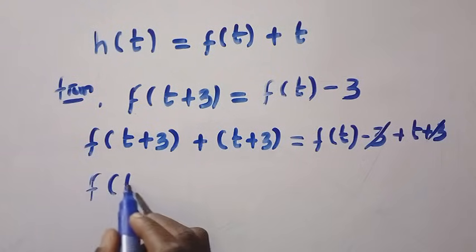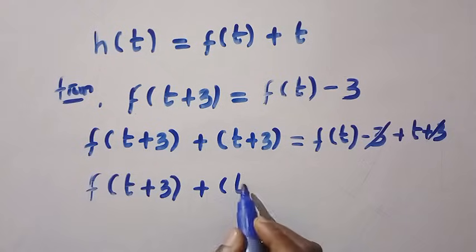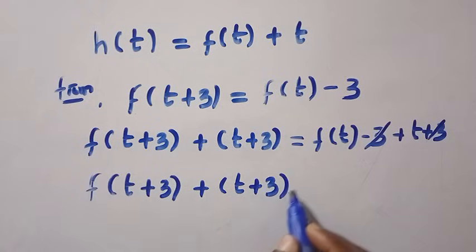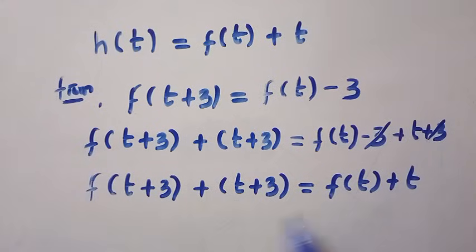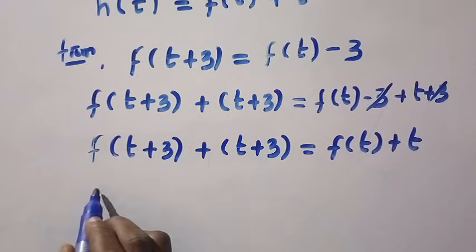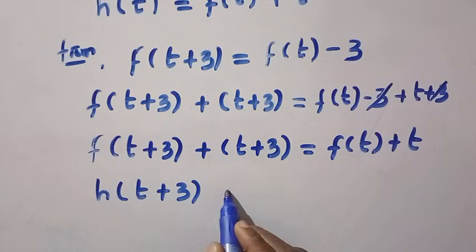This gives us f of t plus 3 plus t plus 3 equals f of t plus t. So this looks like h of t plus 3.